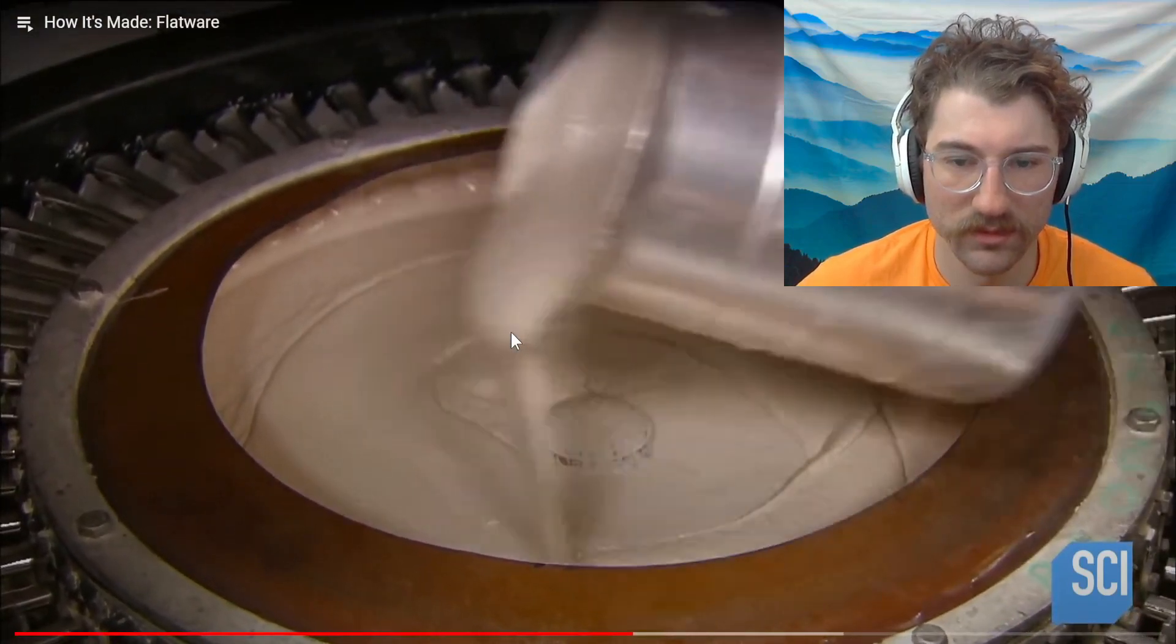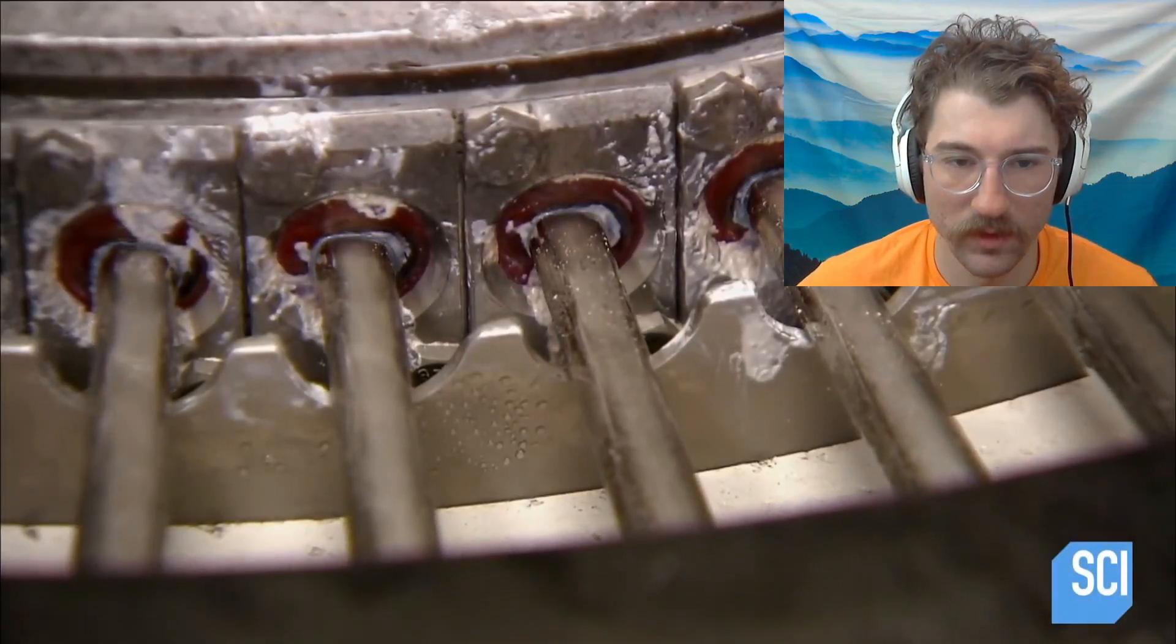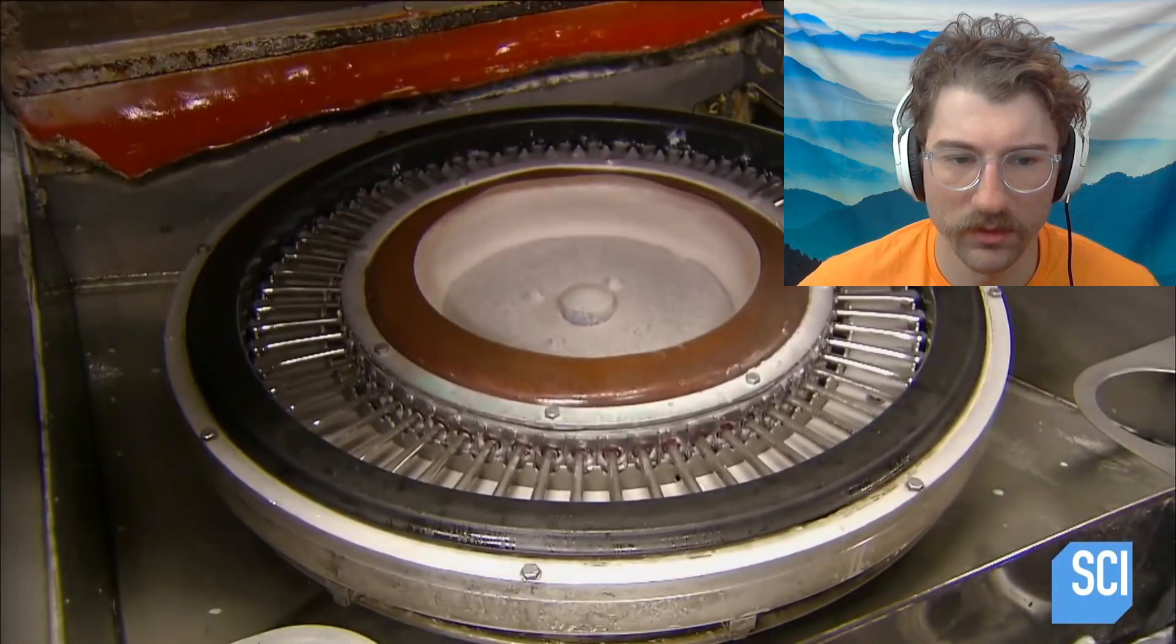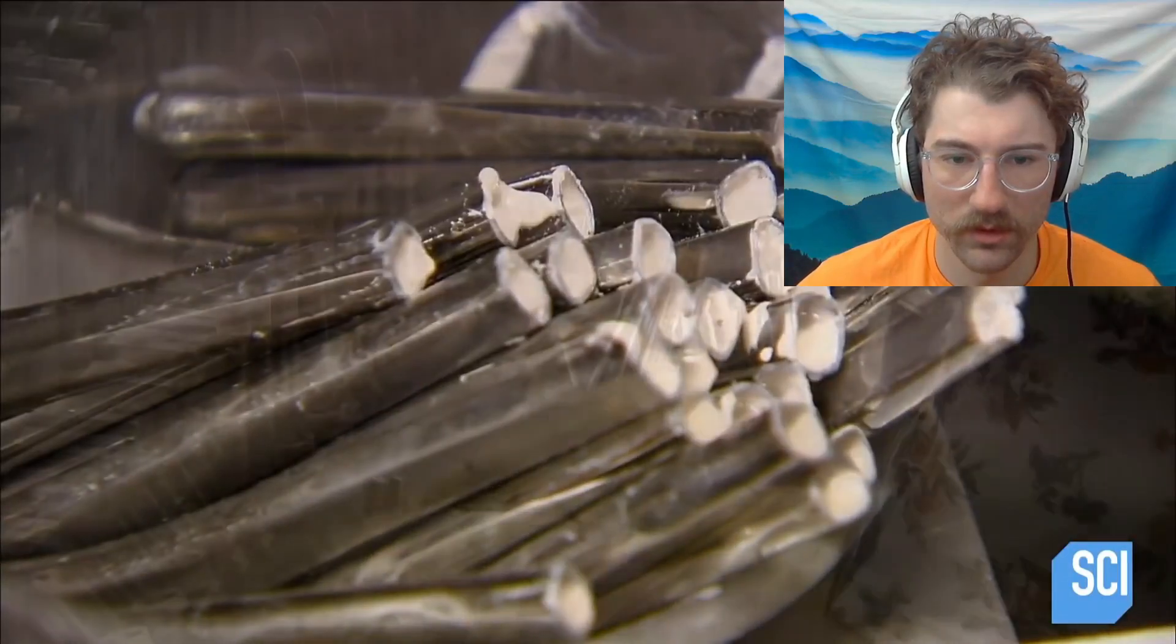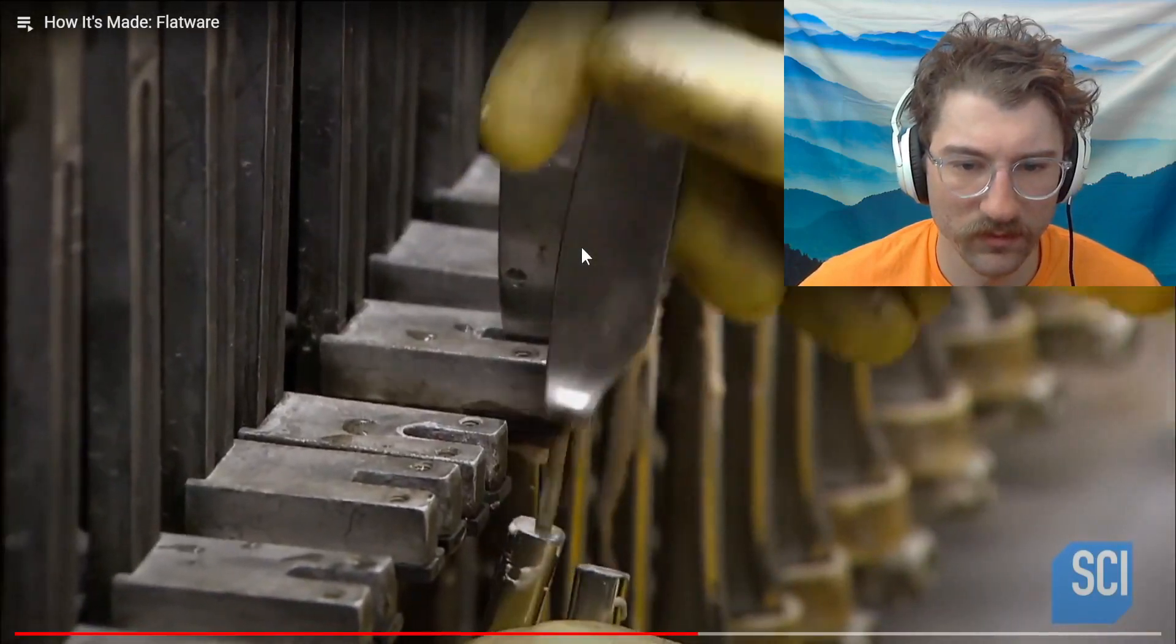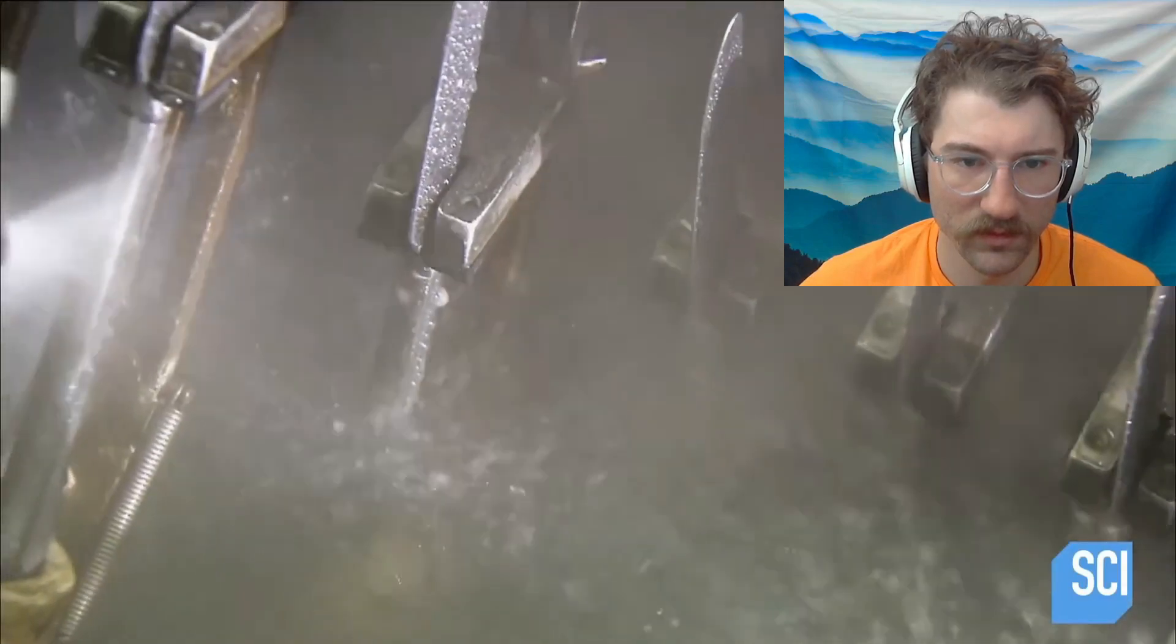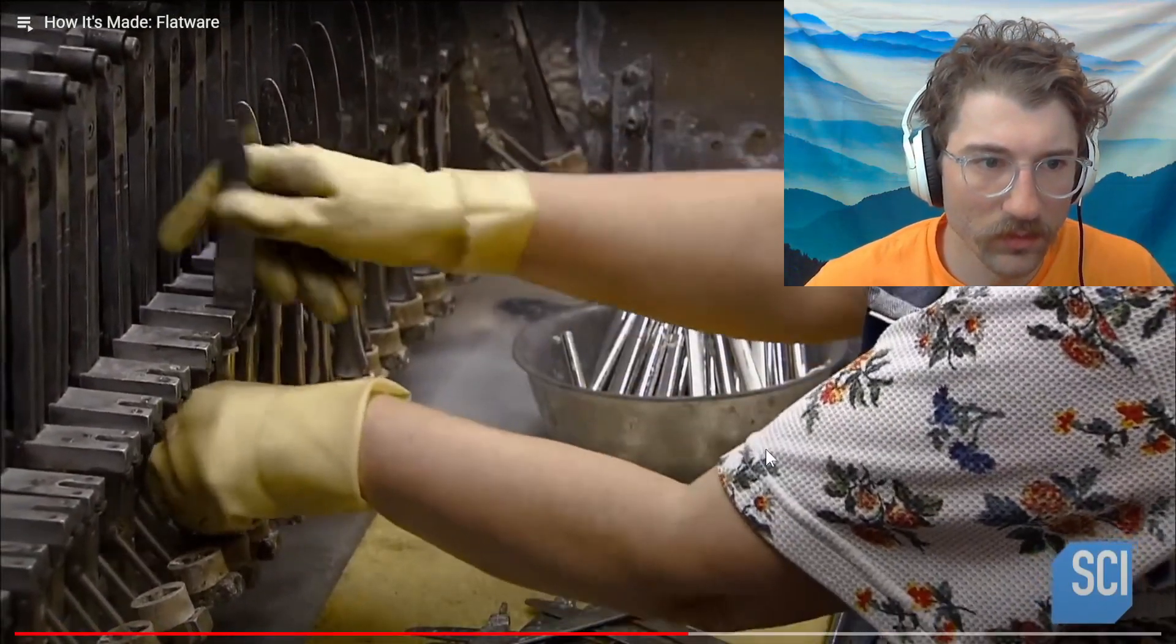Nice. Workers pour liquid cement into the center of a carousel on which they mount 50 handles at a time. As the carousel spins, the centrifugal force shoots the cement outward filling the handle cavities. Okay, then workers insert a blade into each one. A 10 minute soak in hot water cures the cement.